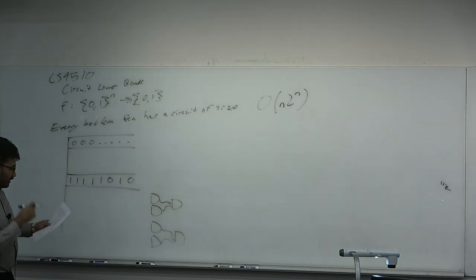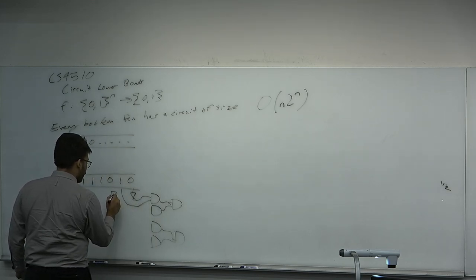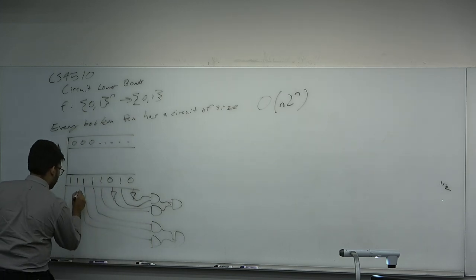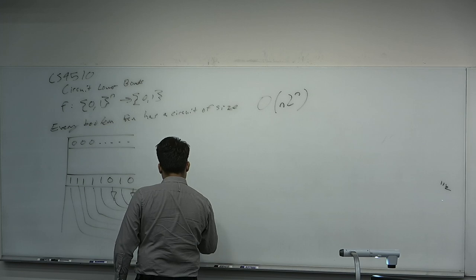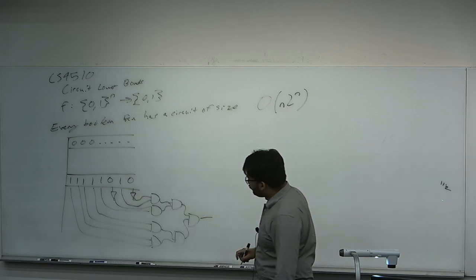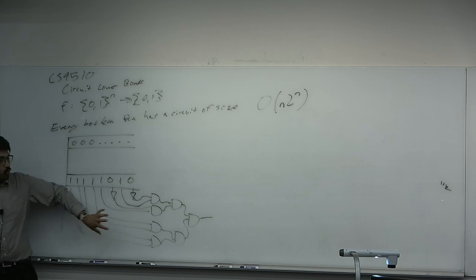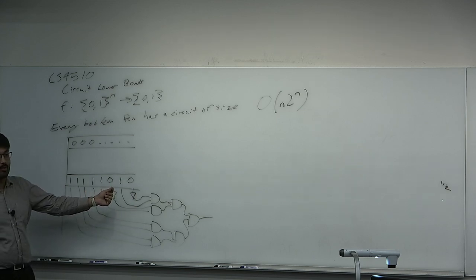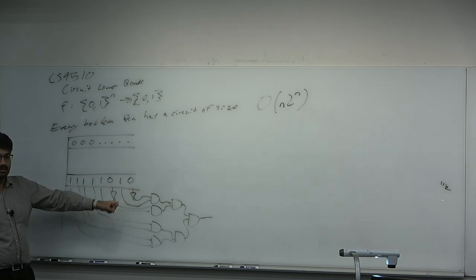If the truth table row is supposed to have a NOT, I'm going to simply put a negation there. If it's supposed to be a one, I'm not going to put a negation there. This circuit will only turn on if these bits are exactly that row — for example, 1,1,1,1,0,1,0.